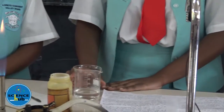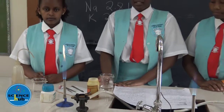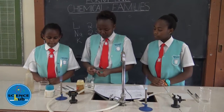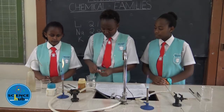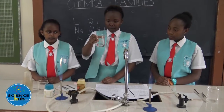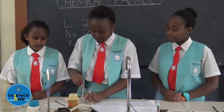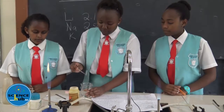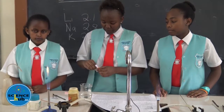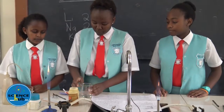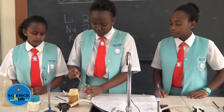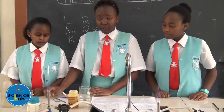Alkali metals react with water to produce metal hydroxide and hydrogen gas. So we are going to test whether this solution is a basic solution using litmus paper. We will first add some red litmus paper to the solution. The litmus paper changes to blue, confirming that the solution formed is basic.